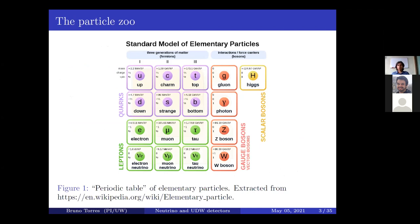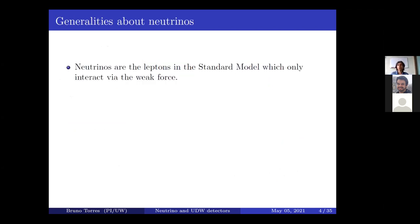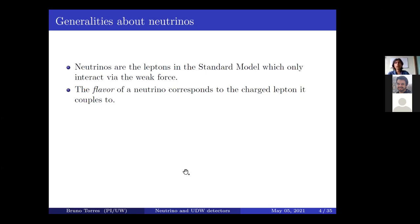Here's the periodic table of elementary particles encoded in the Standard Model of particle physics, showing all the fermions and bosons. We're interested in the bottom left corner, which contains the neutrinos — the leptons with zero electric charge. Neutrinos only interact via the weak force because they're leptons; they don't interact via the strong nuclear force, and they are electrically neutral so they don't couple to photons. In particle physicist jargon, the flavor of a neutrino corresponds to what charged lepton it couples to via the weak force.